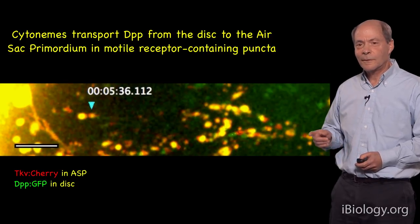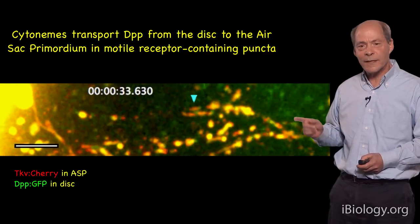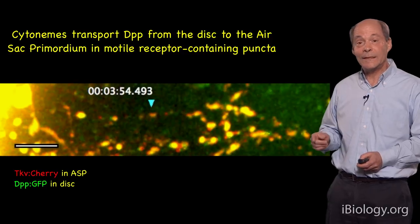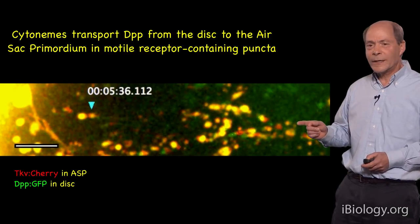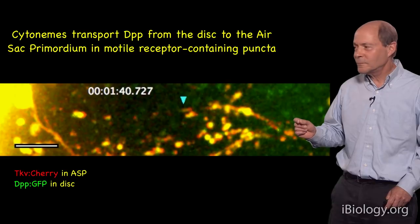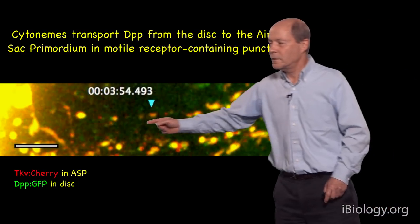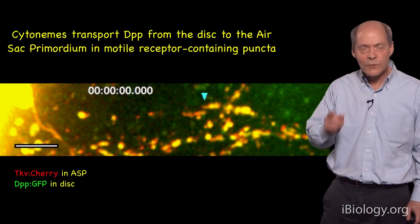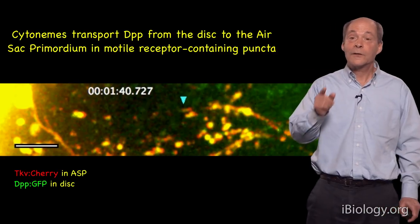We can actually show that DPP-GFP moves from the wing disc to the air sac primordium cells in the cytonymes, and that's what this movie shows. We're expressing Thick Vein-cherry (the DPP receptor fused to cherry) in the air sac primordium and simultaneously expressing DPP-GFP in the wing disc. The green arrowhead focuses on one particular punctum containing both DPP-GFP and Thick Vein-cherry — appearing yellow — and you can see it moving from the wing disc cells to the air sac primordium. As far as I know, this is the first time a protein has been observed moving from a producing to a target cell in the context of its receptor associated with a cytonyme.